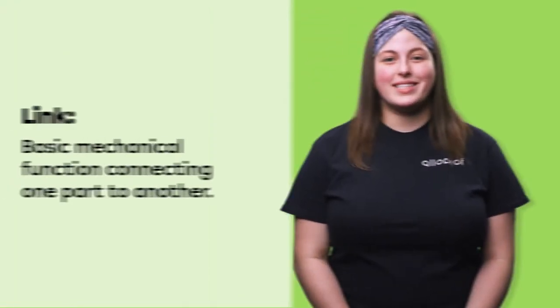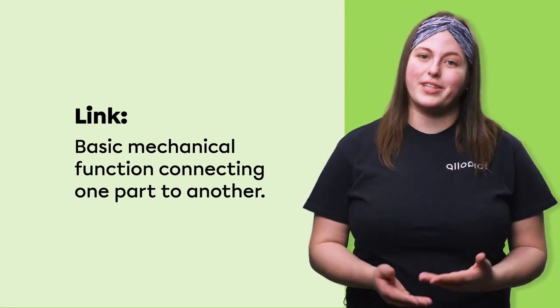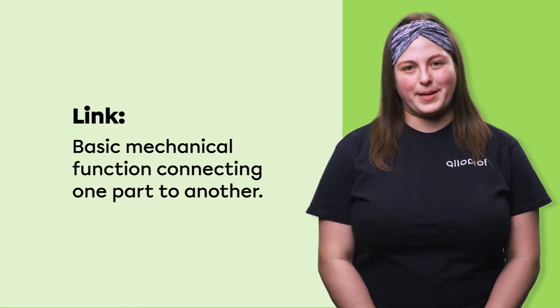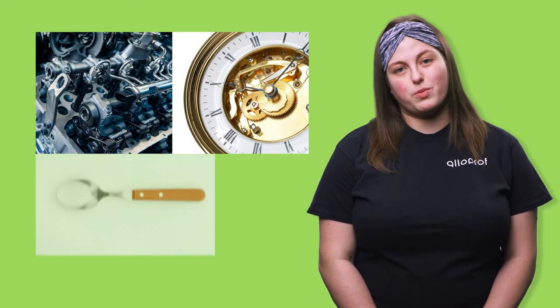In technology, an important concept is that of links and their characteristics. When we talk about a link, we are referring to how two parts of an object called components are linked together. A link is therefore a basic mechanical function that connects one part to another, thus allowing the object to function properly. Links are present in almost all objects. In fact, it's very rare that an object is designed out of a single piece. We can find links in complex objects such as a motor or a clock, or in other simple objects such as a spoon or a chair.